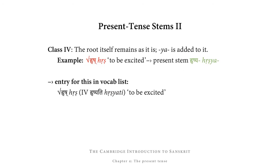Now let's look at the present tense stems belonging to class 4. A verbal root belongs to class 4 if it forms its present tense stem by keeping the root itself as it is and adding ya to it. For example, the class 4 root hṛṣ, which means 'to be excited,' forms its present tense stem by keeping the root as hṛṣ and adding ya, giving us the present tense stem hṛṣya. In a vocabulary list it would appear as: root hṛṣ, class 4, third person singular hṛṣyati, meaning 'to be excited.'